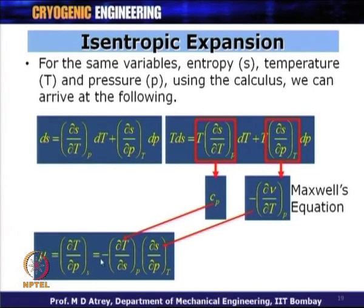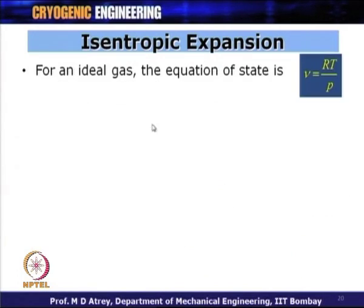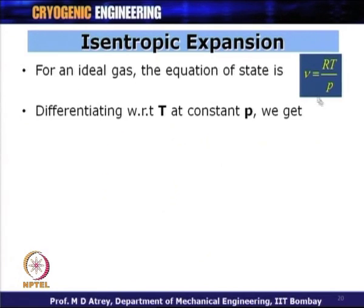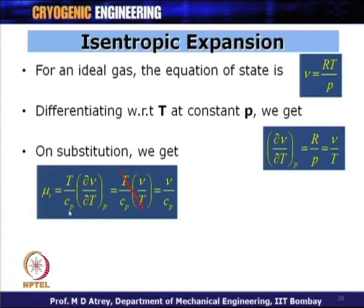Combining the negative signs, mu_S equals (T/C_P)(del V/del T)_P. Applying the ideal gas law — PV equals RT, so V equals RT/P — differentiating with respect to T at constant P gives del V/del T equals R/P equals V/T. Substituting, T cancels and mu_S reduces to V/C_P for an ideal gas.